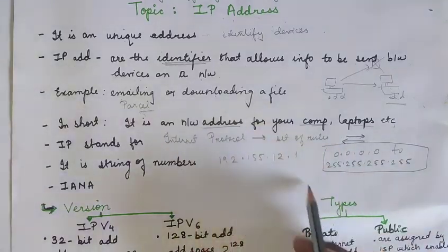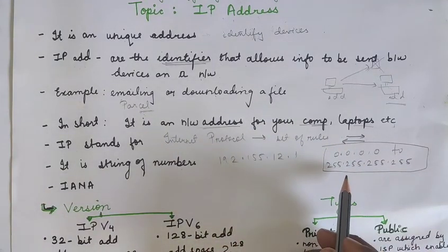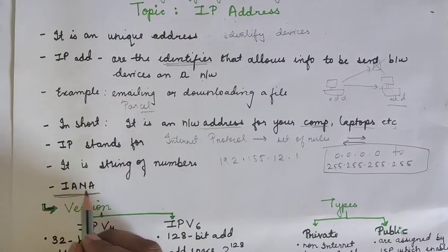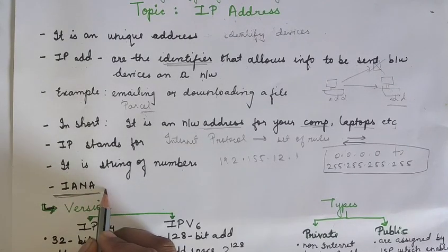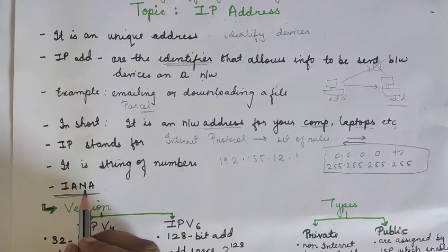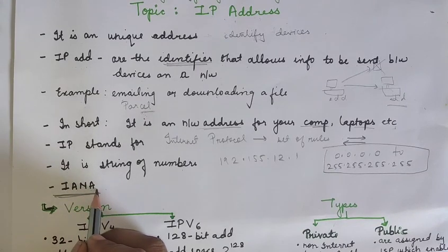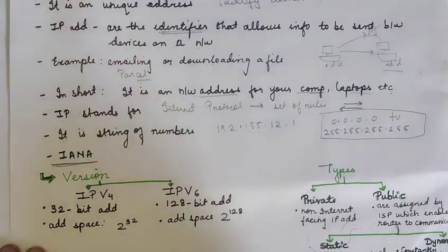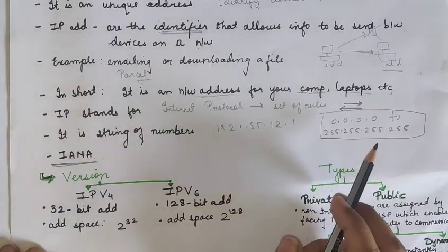Actually, this is the format or you can say that these addresses are actually assigned by IANA. This is nothing but the Internet Corporation for the Internet Assigned Numbers Authority. It is the one who are going to assign the unique IP addresses to all the devices so that it is unique because no two devices can have the same addresses.